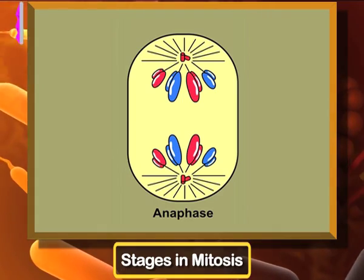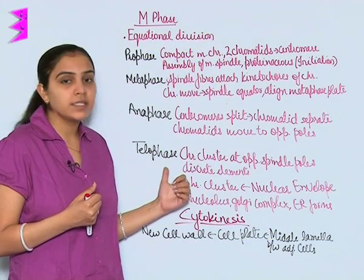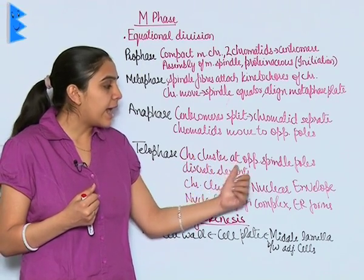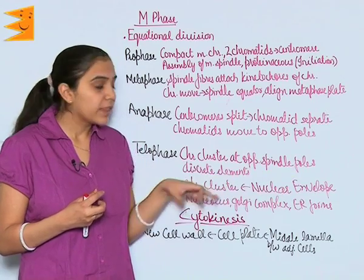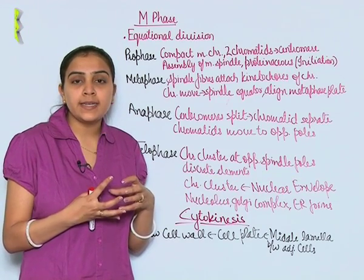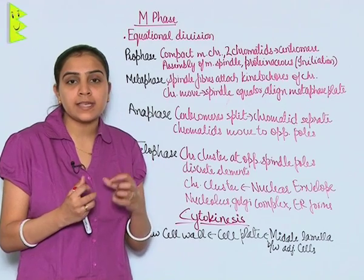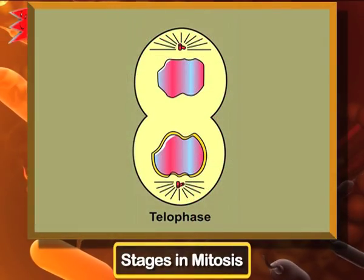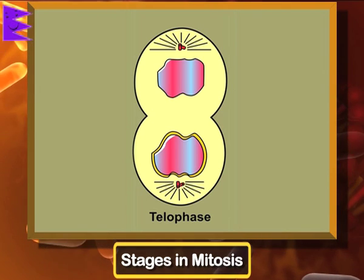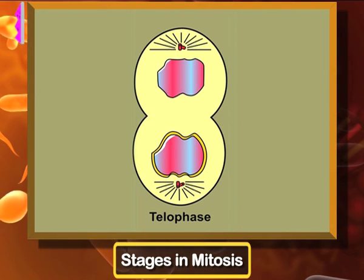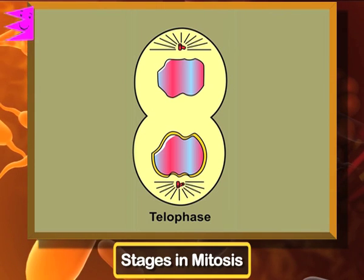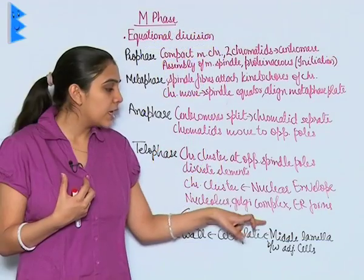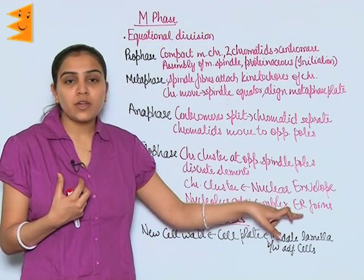Next is telophase. Chromosome clusters form at opposite spindle poles and now lose their identity as discrete elements. You can see there is nuclear envelope development outside these chromosome clusters, and nucleolus, Golgi apparatus, Golgi complex, and endoplasmic reticulum all start forming.